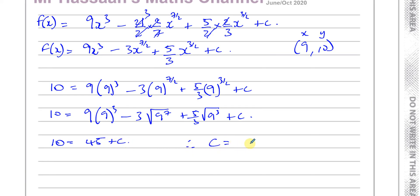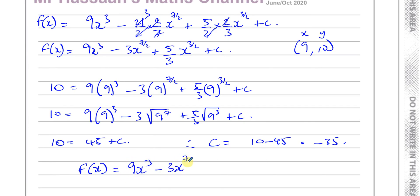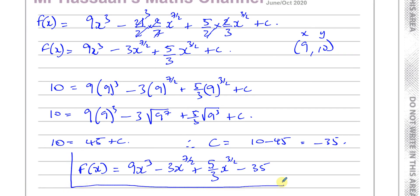So f(x) = 9x³ − 3x^(7/2) + (5/3)x^(3/2) − 35. And there we have the answer to question number 9, which concludes this paper.